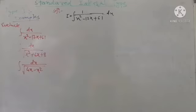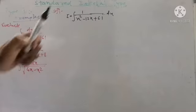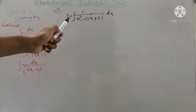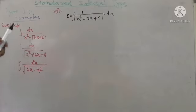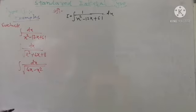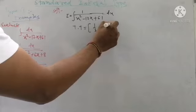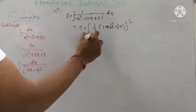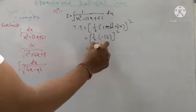First example: integration of 1 upon (x² - 12x + 61). The numerator is 1 and the denominator is a quadratic polynomial with a term of x given, so this is a Type 1 integral. The coefficient of x² is 1. We evaluate the third term using the formula: one-half into coefficient of x, all squared. Here, coefficient of x is -12, so (-12/2)² = (-6)² = 36. The third term is 36.